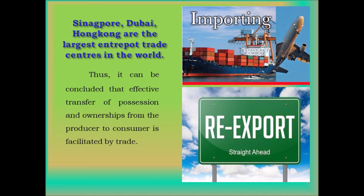It can be concluded that effective transfer of possession and ownership from the producer to consumer is facilitated by trade. In this lesson we have learned that trade — the buying and selling of goods and services — is divided into two: internal trade, which is buying and selling within the boundaries of a country, and external trade, which is buying and selling of goods with other countries. Thank you students.